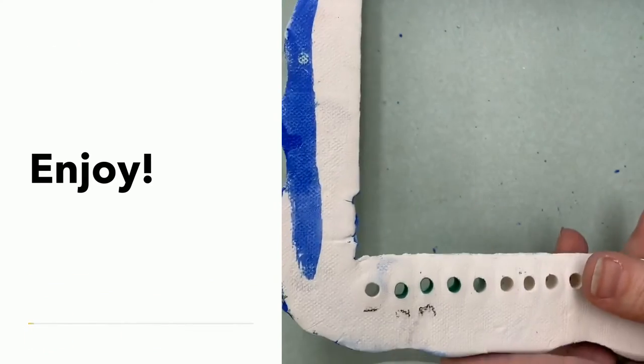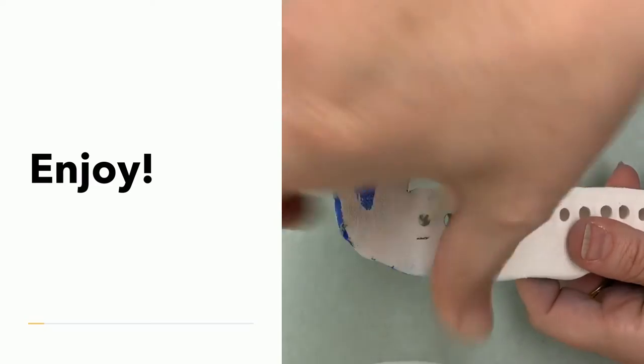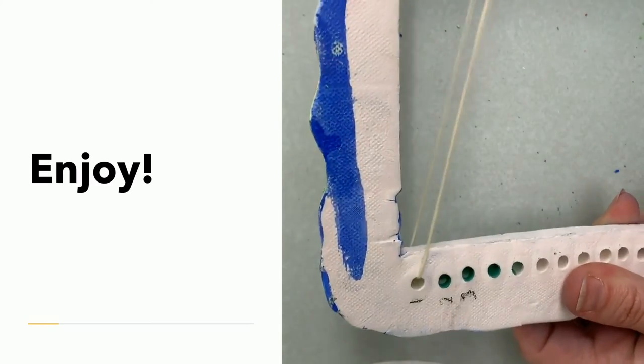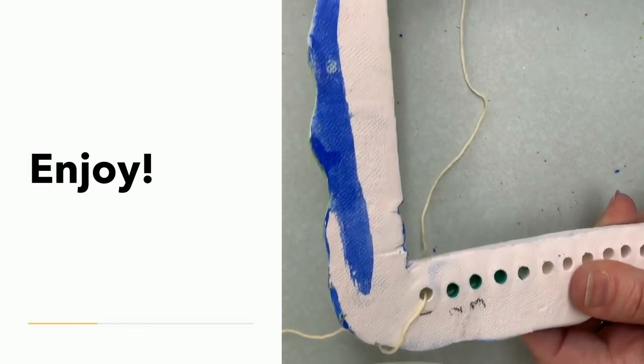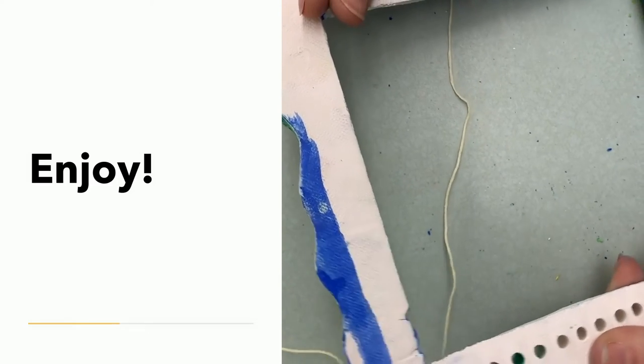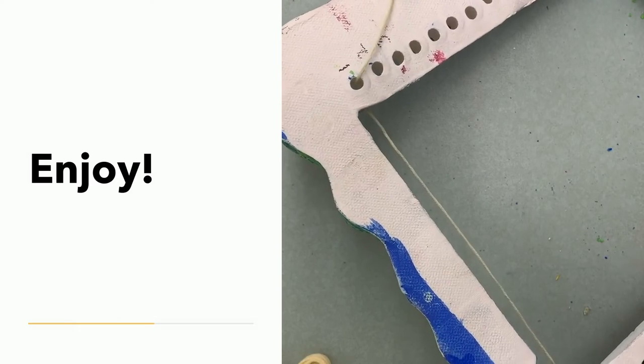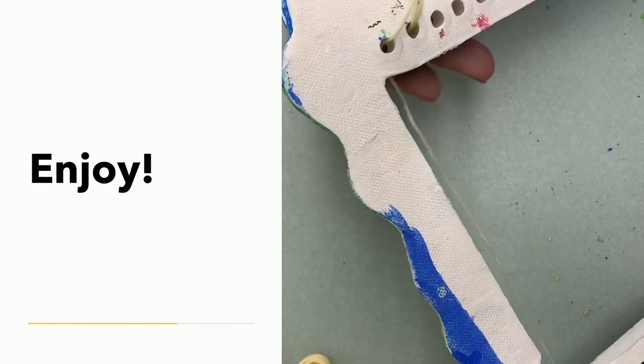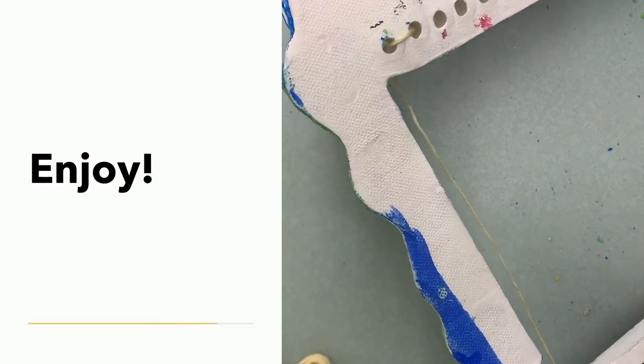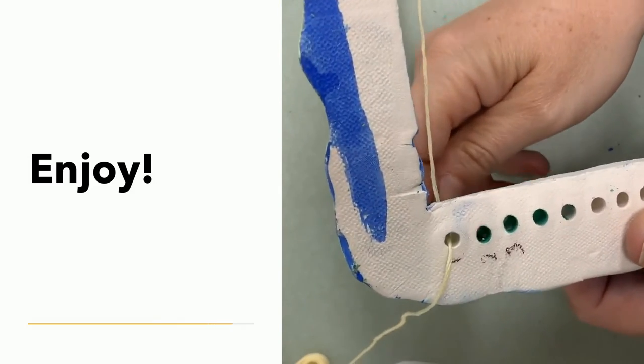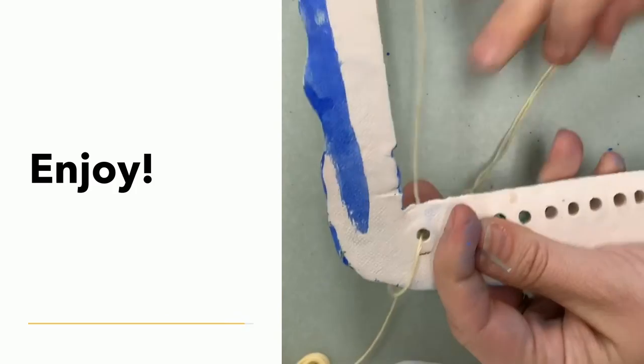This is for the square or rectangle version. So same thing, go down through one, pull it pretty tight, up through one on this side over here. Down through one, up through one, down through two here, and then all the way up through two over here. And you just keep going.